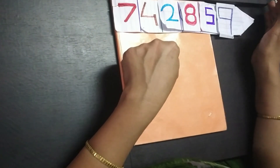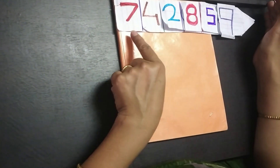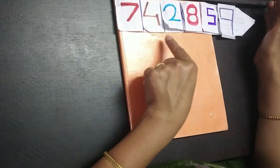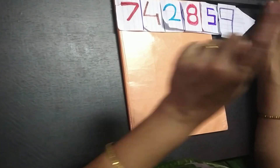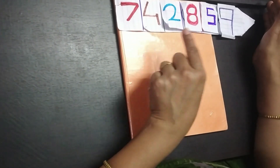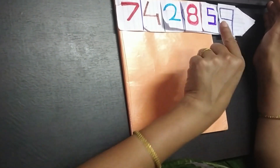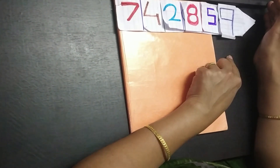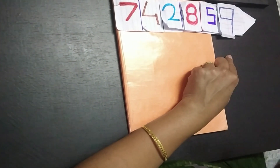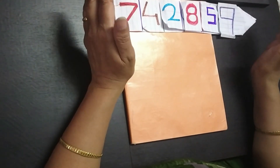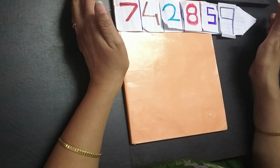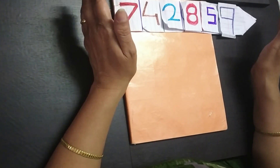Can you tell me the number formed by these place value cards? The number is 7,42,859. In this way, I have used place value cards to represent the given number.